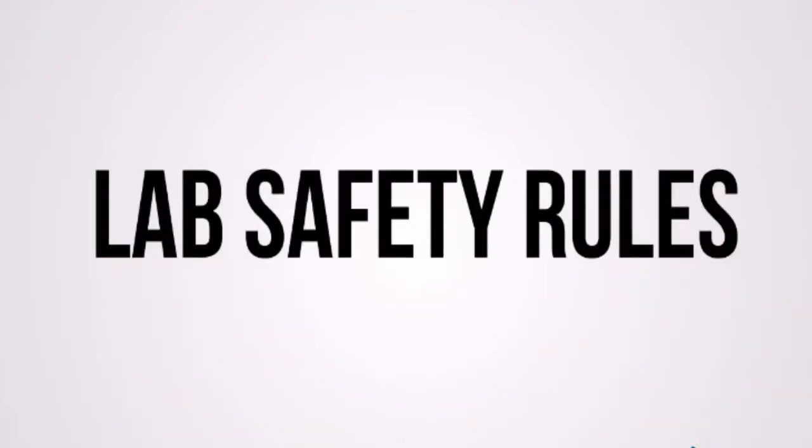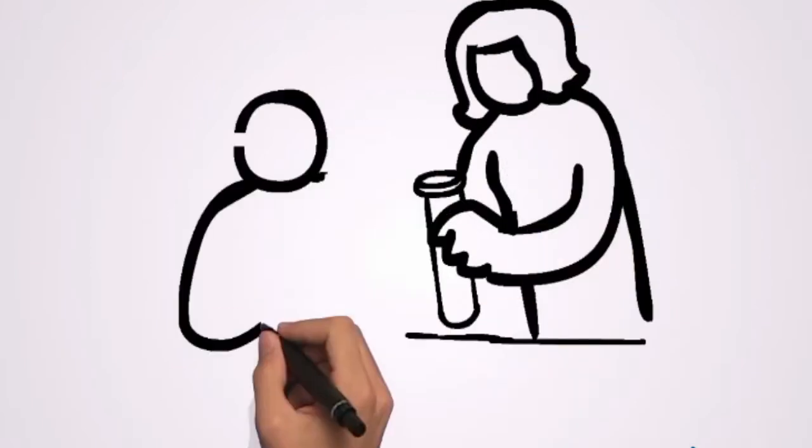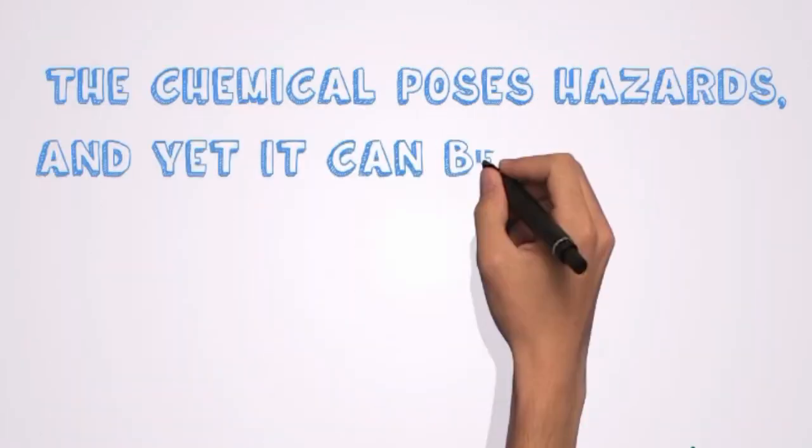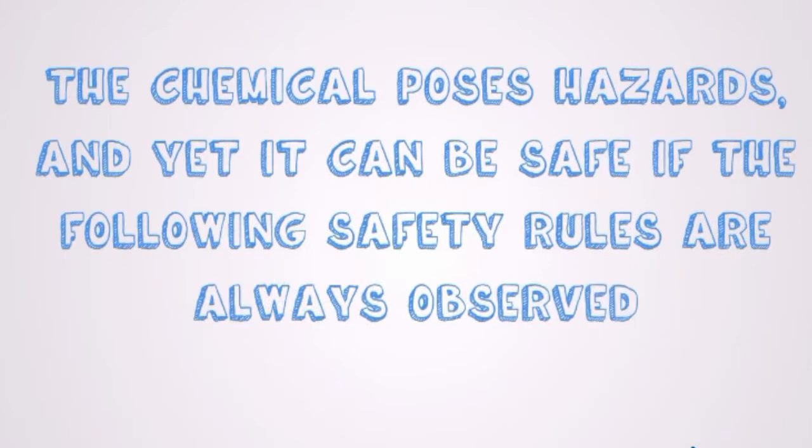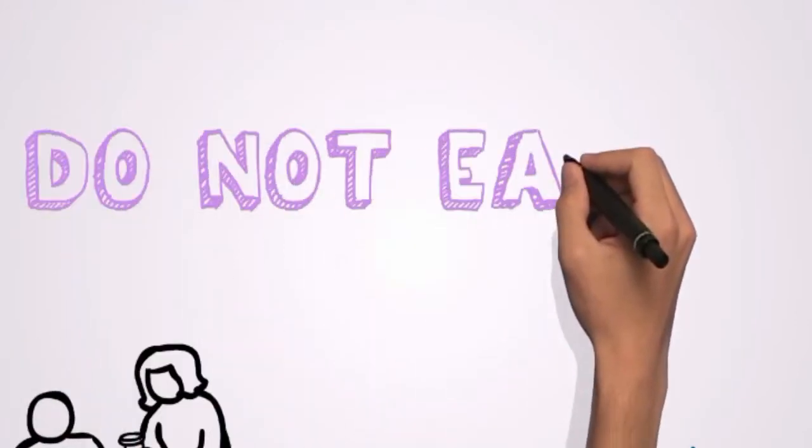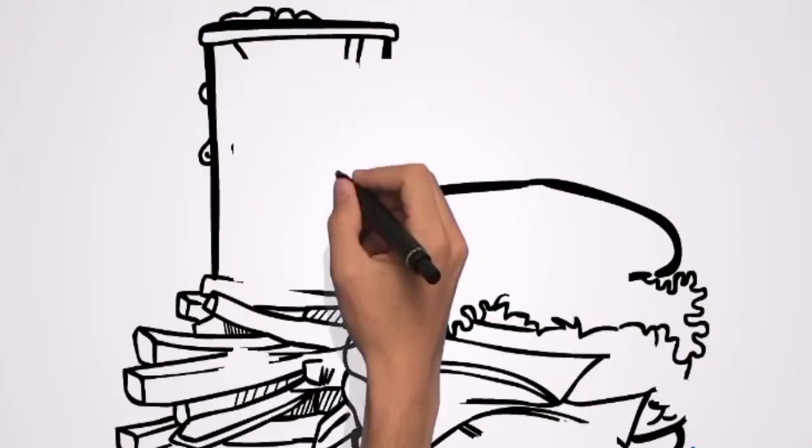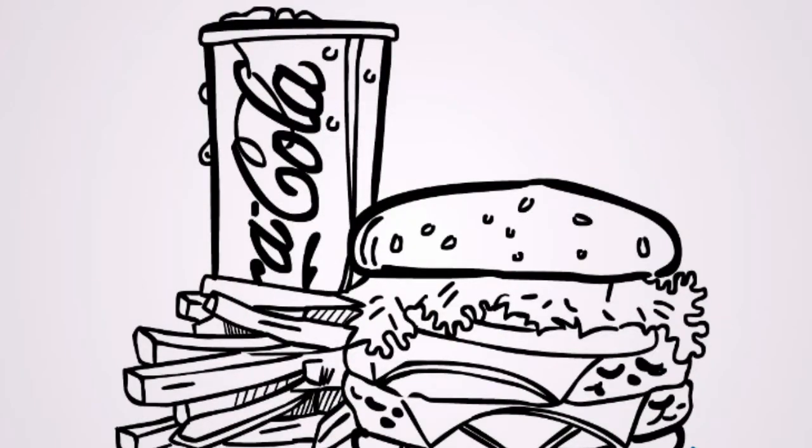Lab safety rules: The chemical laboratory poses hazards, and yet it can be safe if the following safety rules are always observed. Rule 1: Do not eat or drink anything in the laboratory. This applies to both food and chemicals. The obvious danger is poisoning.